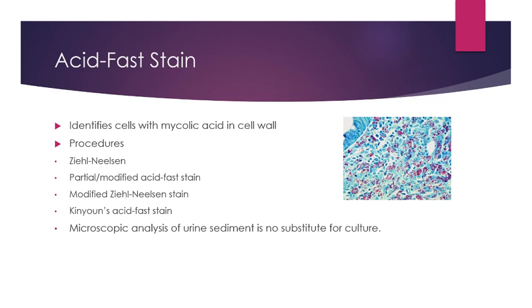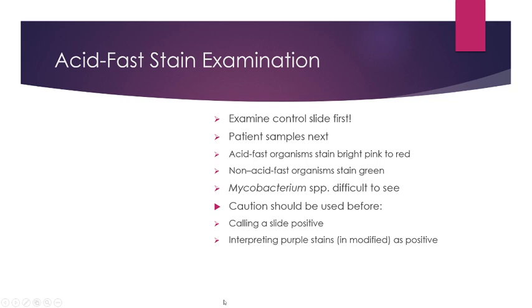The acid-fast stain identifies cells with mycolic acid in the cell wall. There are a couple of different procedures, most being some type of Ziehl-Neelsen stain. It's not something we typically do in practice but we potentially could. We're typically looking for mycobacterial bacteria like a tuberculosis bacterium. Acid-fast organisms stain bright pink to red; non-acid-fast organisms stain green. Be cautious when calling a slide positive, and use a control slide.